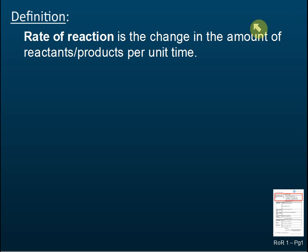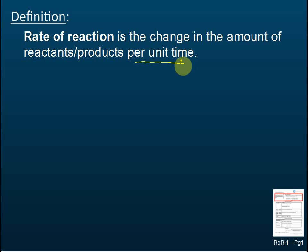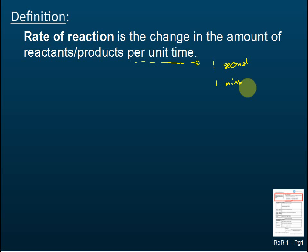By definition, rate of reaction is the change in the amount of reactants or products per unit time. Unit time doesn't mean only one unit — it can be one second, one minute, or one hour. Each of these is one unit of time.